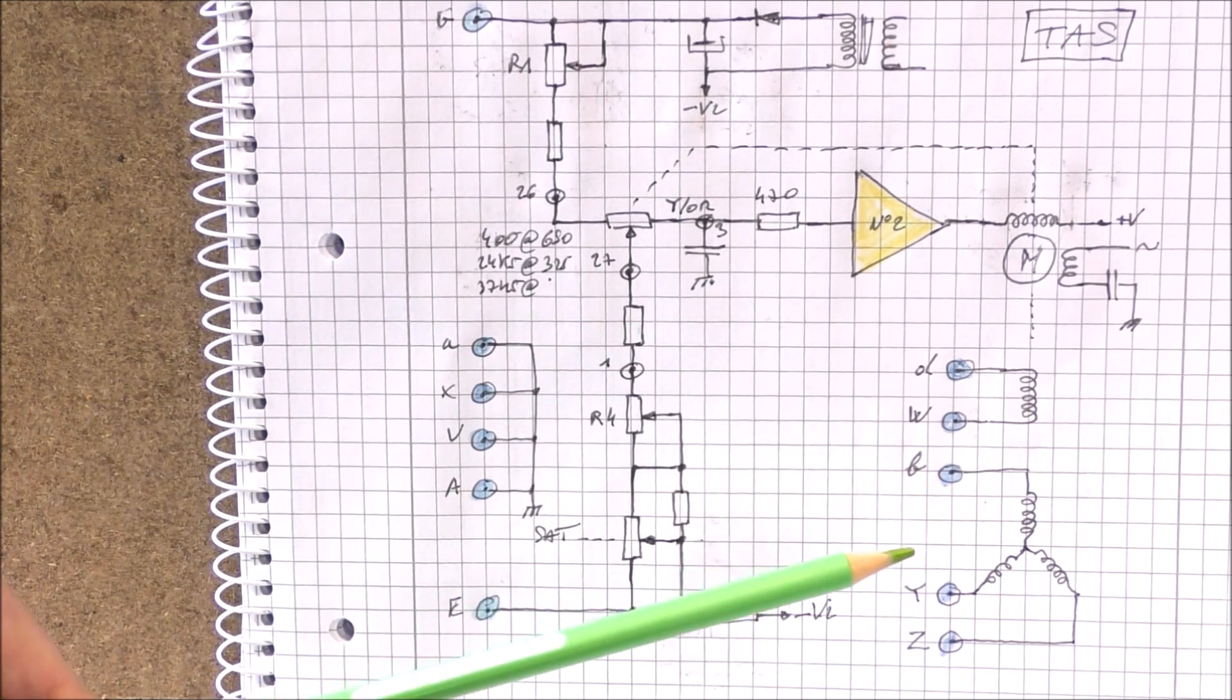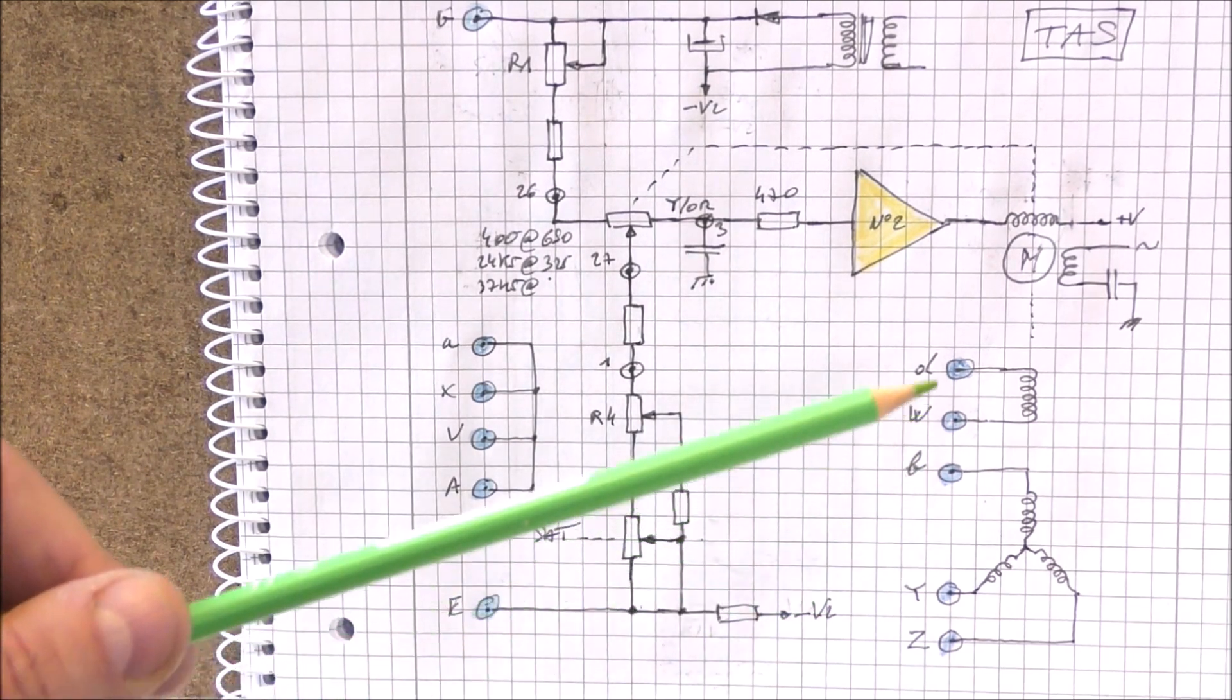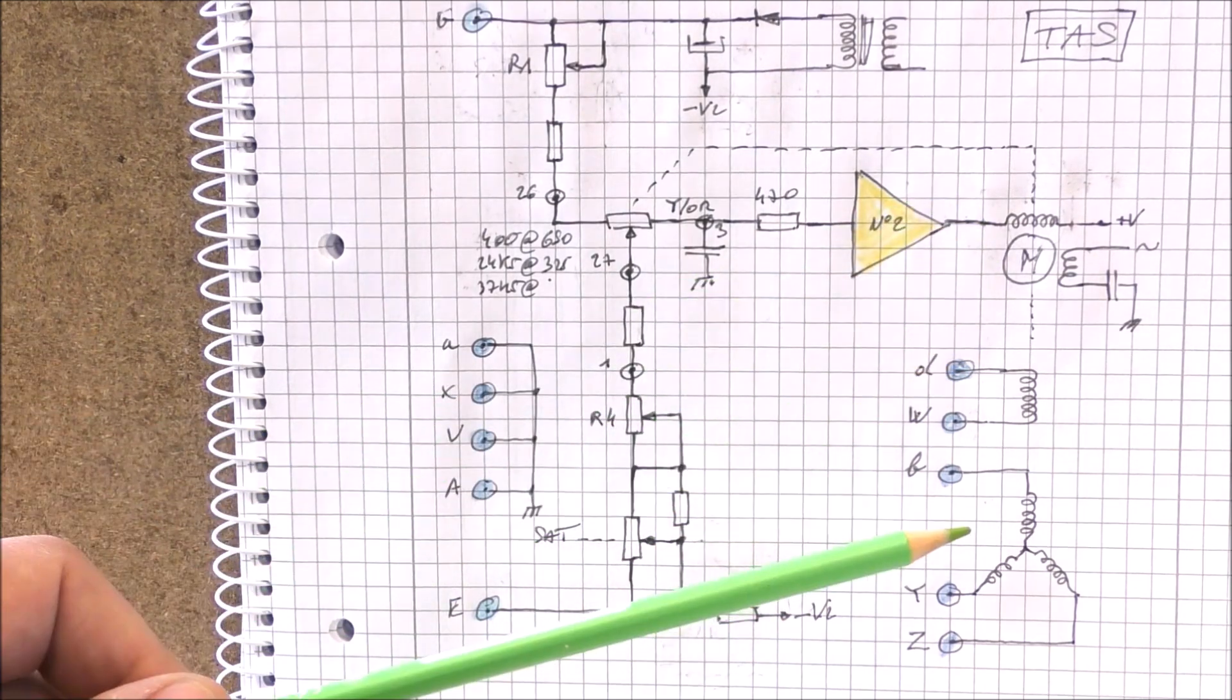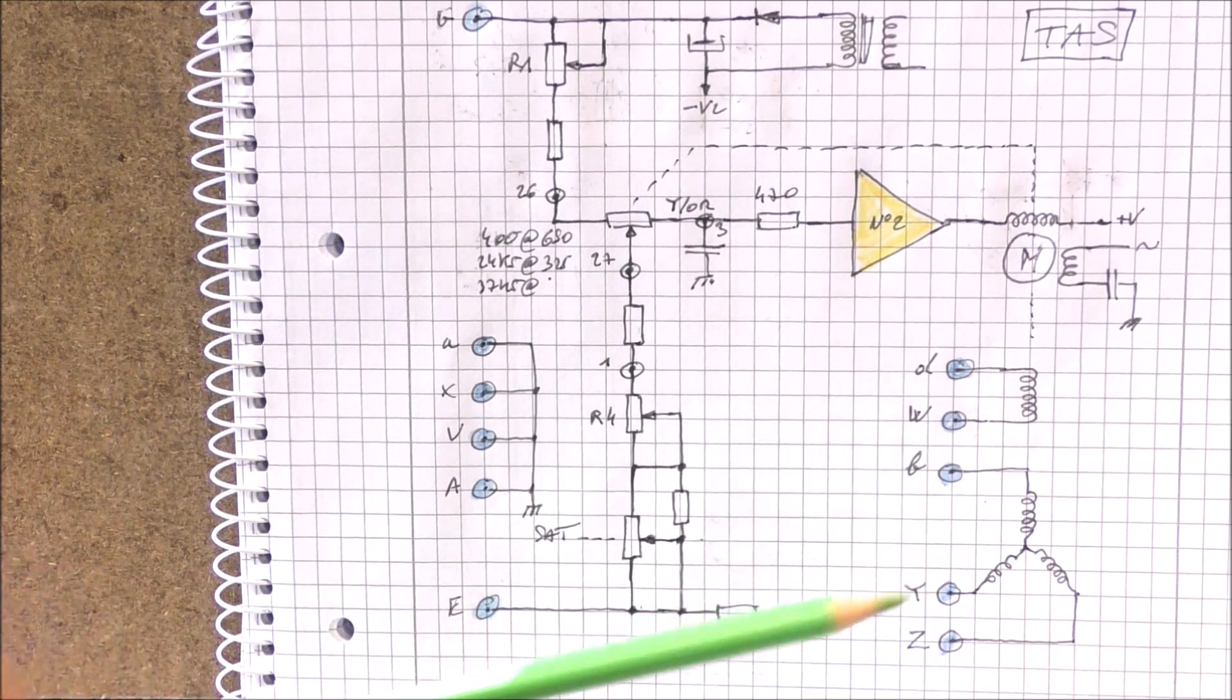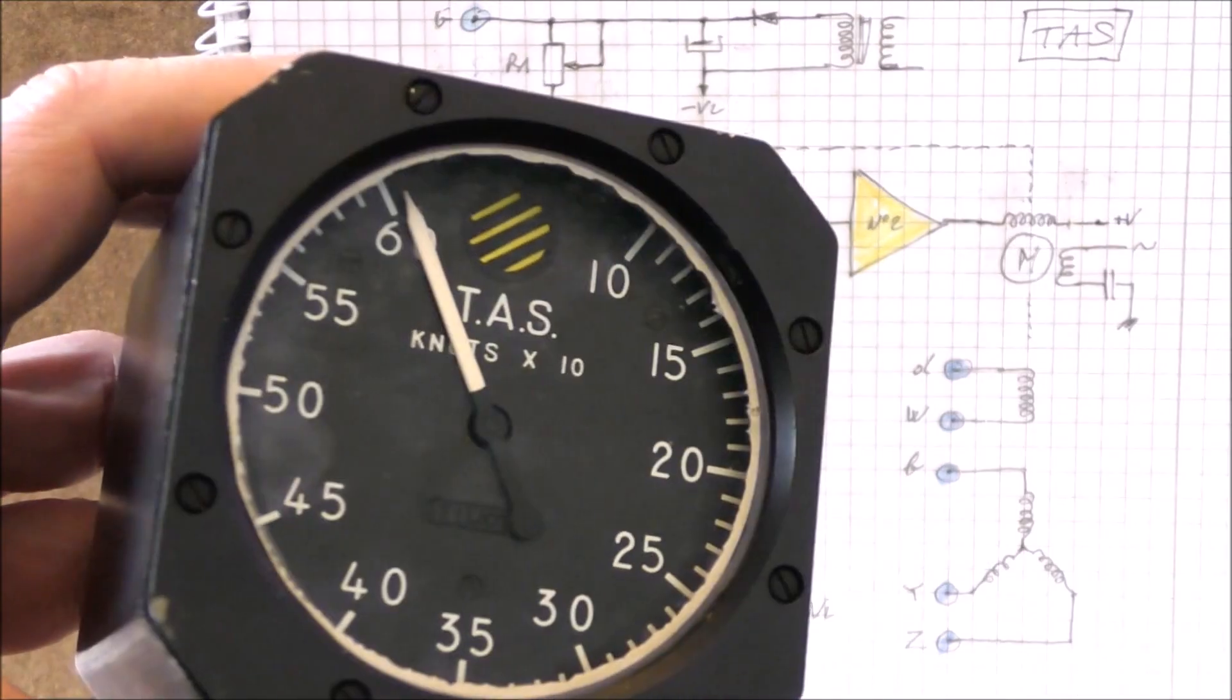So you can see that there is also a synchro transmitter which is linked to the output shaft here. Therefore it is possible also to connect a passive indicator for the true airspeed and this one for example.